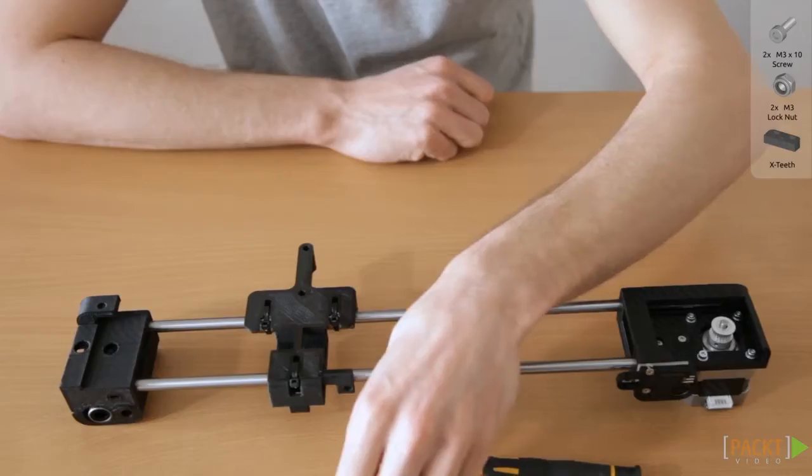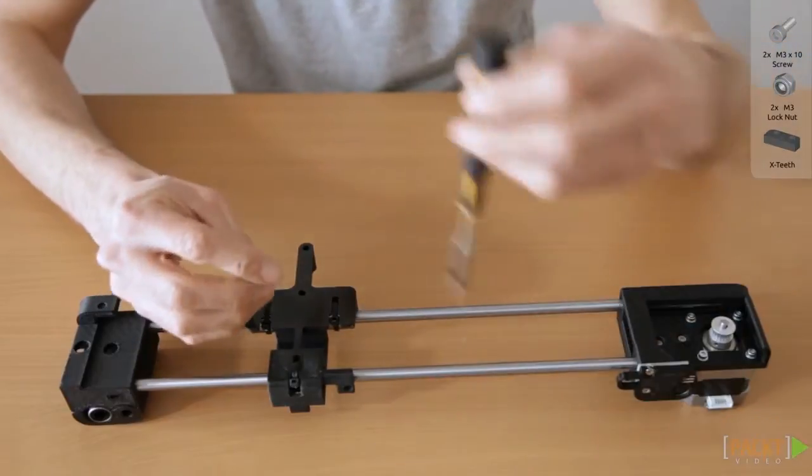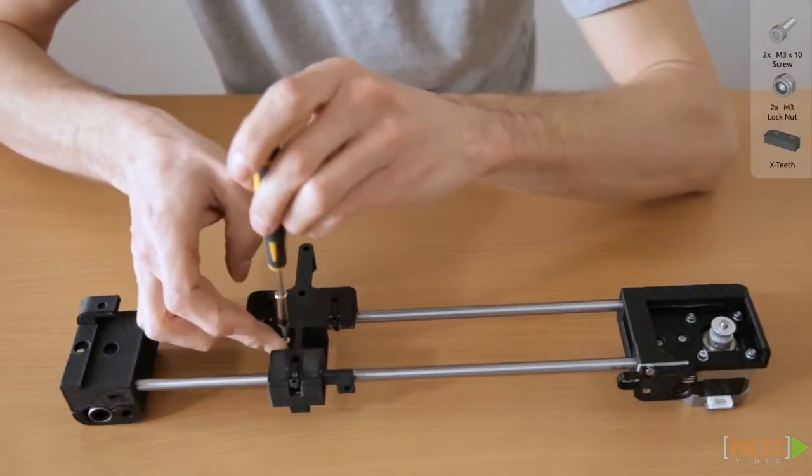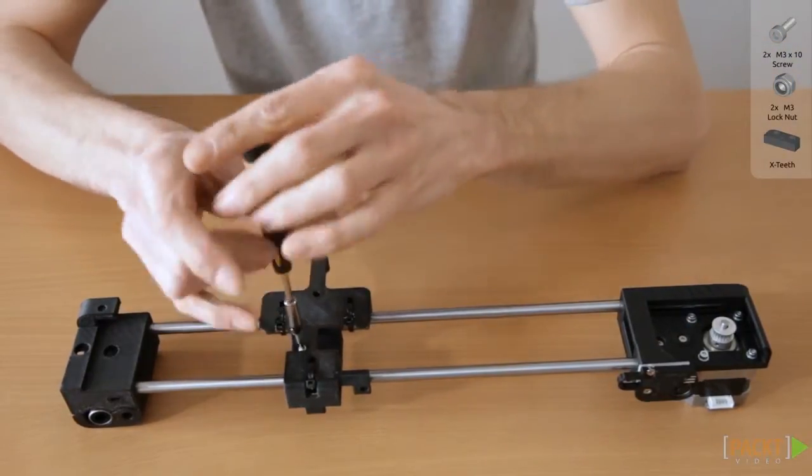You can mount the teeth onto the X carriage either before or after you put it on the X-bridge. Here we're showing the X-bridge unmounted from the Z-unit.